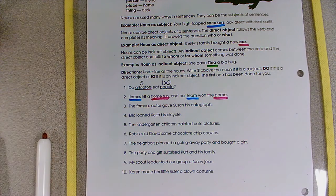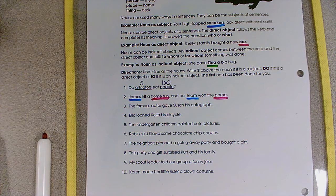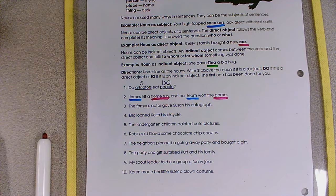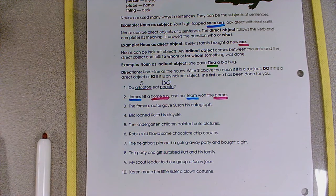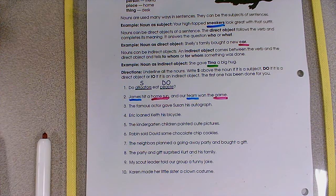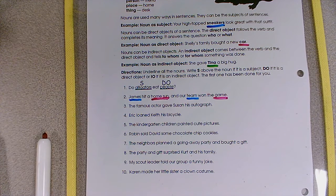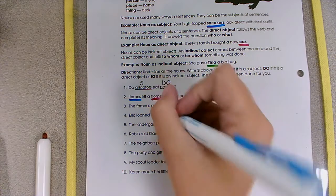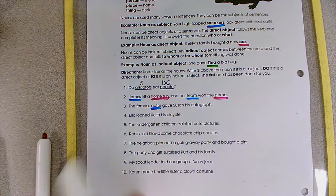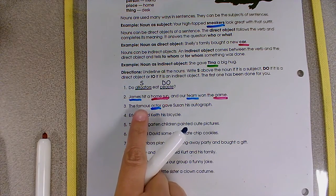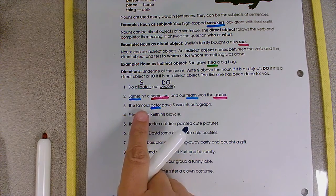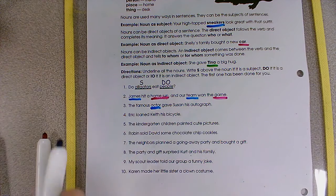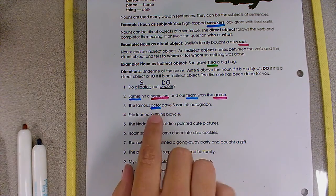Number three, the famous actors gave Susan his autograph. Hey, that's one of our vocabulary words, autograph. We know that word. The famous actor gave Susan his autograph. So let's find the subject. Think about what word or what noun is doing the action, is doing the verb. It would be actor. We do not need to underline famous, because famous is not a noun. Famous is an adjective. So it's not part of our noun.